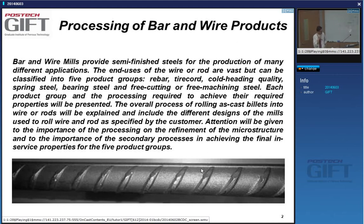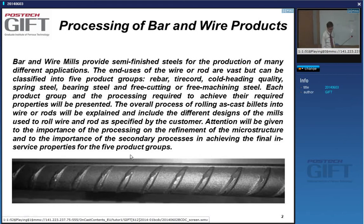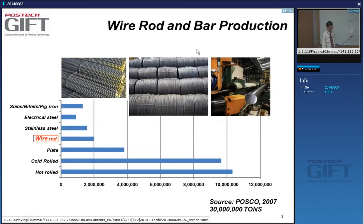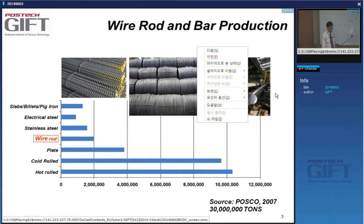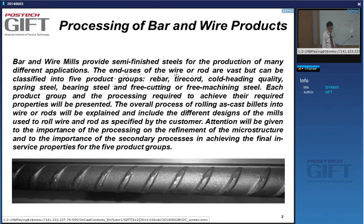The next topic to be discussed will be bar and wire products, then long products and plate. Product groups to be covered include rebar, tire cord, cold heading quality steels, spring steels, bearing steels, and free-cutting or free-machining steels. The concepts behind the steels — their compositions and processing — will be explained in terms of why certain choices are made based on the application.